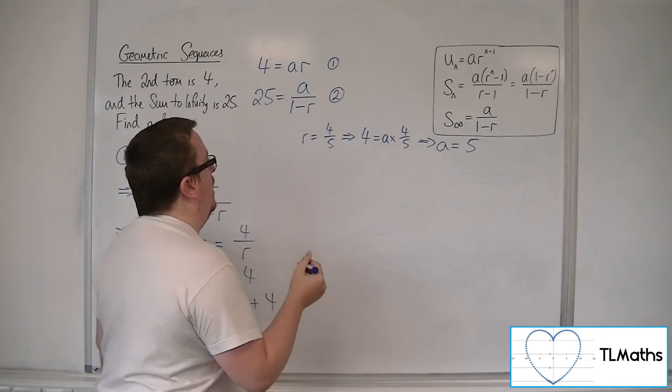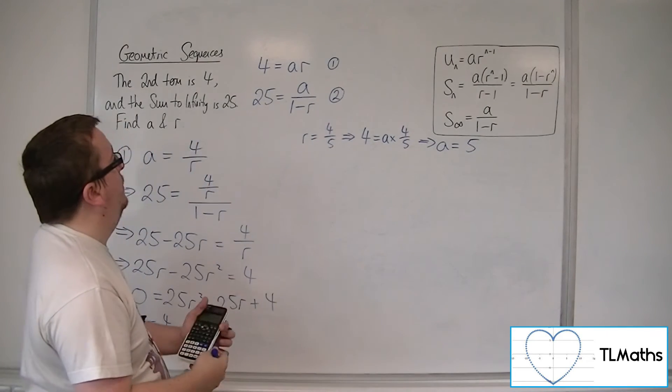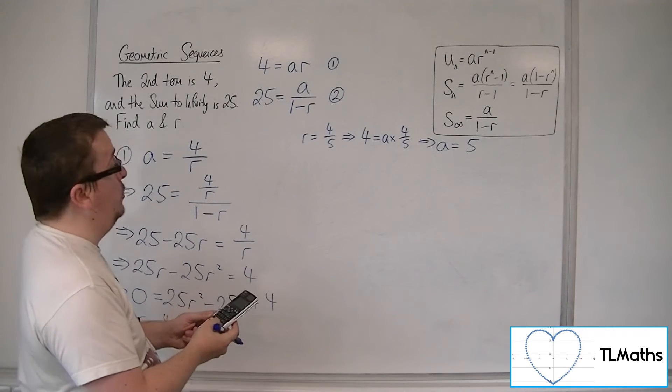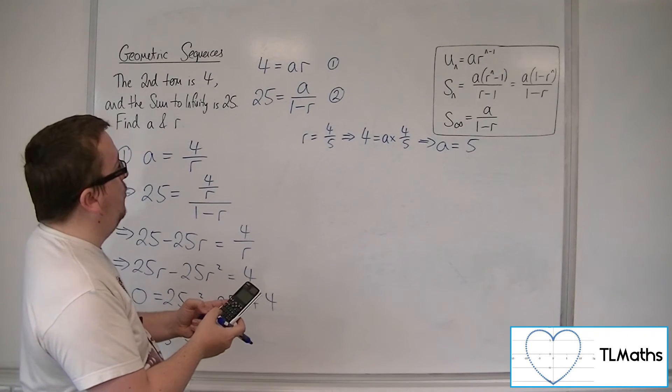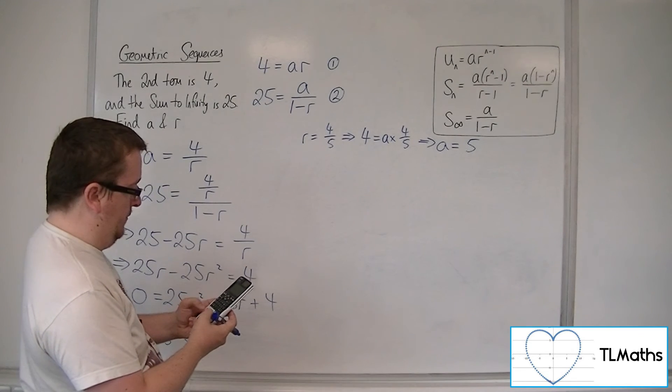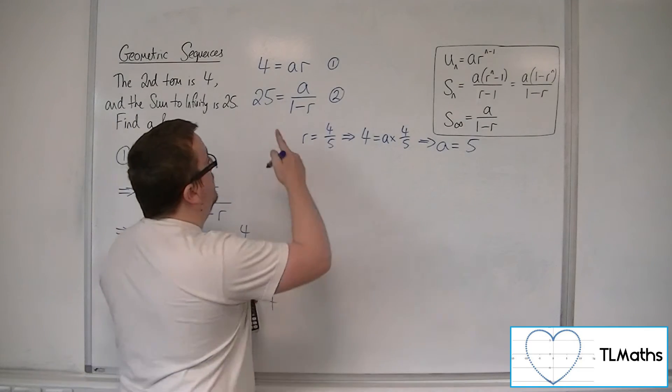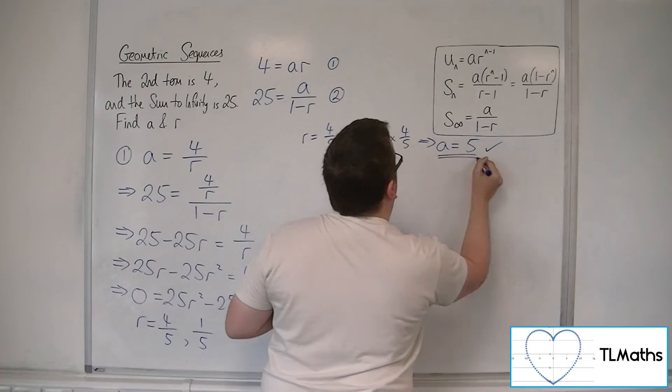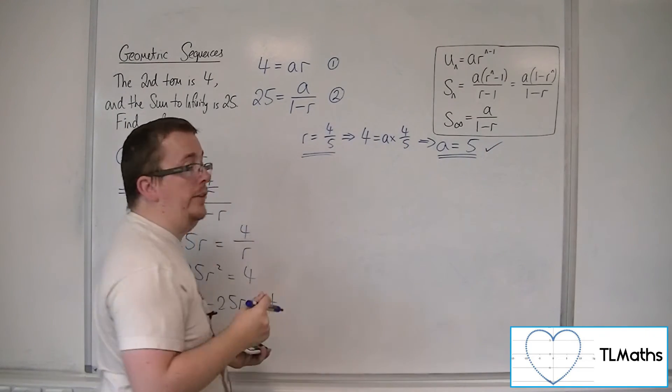So r is 4 fifths, a is 5. So if I substitute that into equation 2, so 5 divided by 1 minus 4 fifths, we get 25. And so a is 5, r is 4 fifths, works.